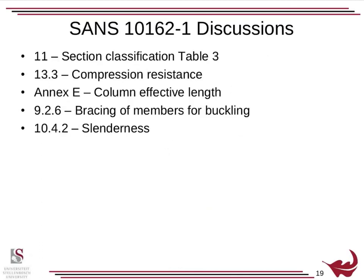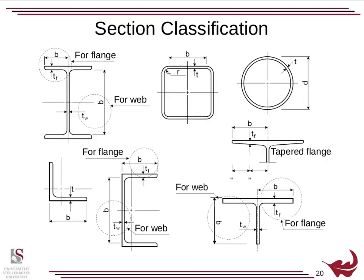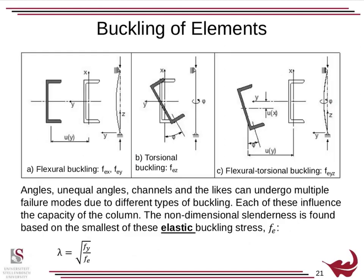When it comes to the design of columns, there are some code sections you'll need to understand — covered in a separate video. You'll also need to understand section classification — refer to the section classification video. Now we're going to go through buckling. We have different types of buckling, and buckling is something you can see: you take a ruler, squash it, and the ruler will buckle out. Depending on the geometry of the section, you'll get quite defined buckling behavior.